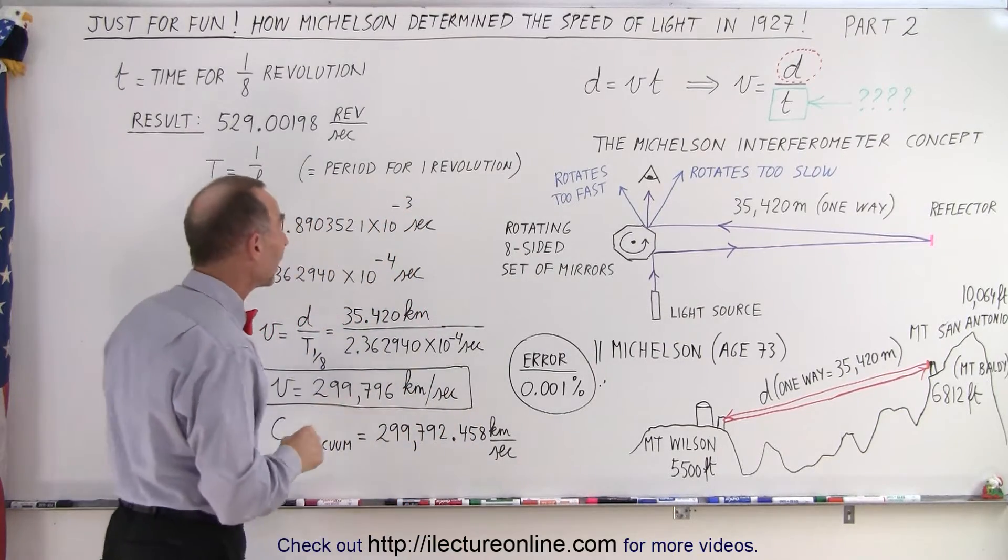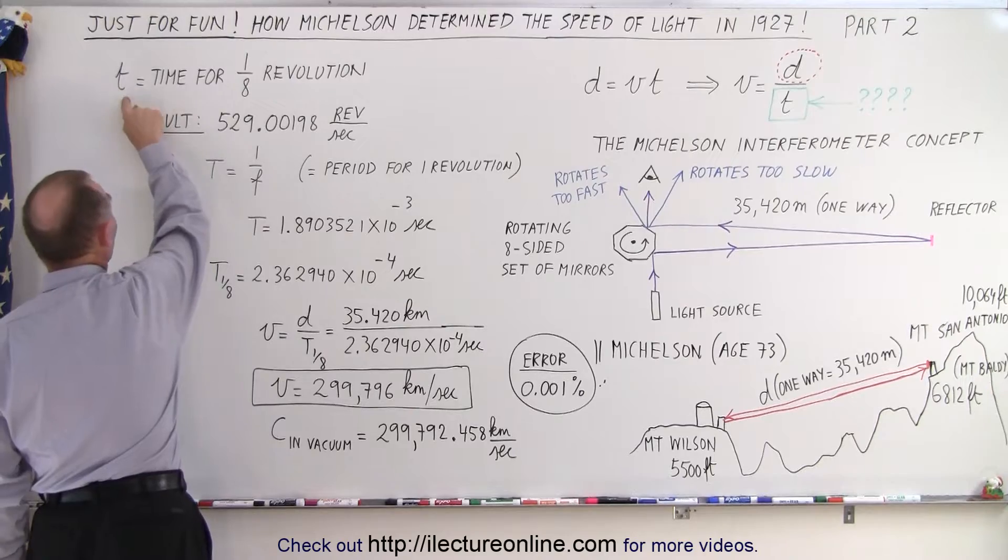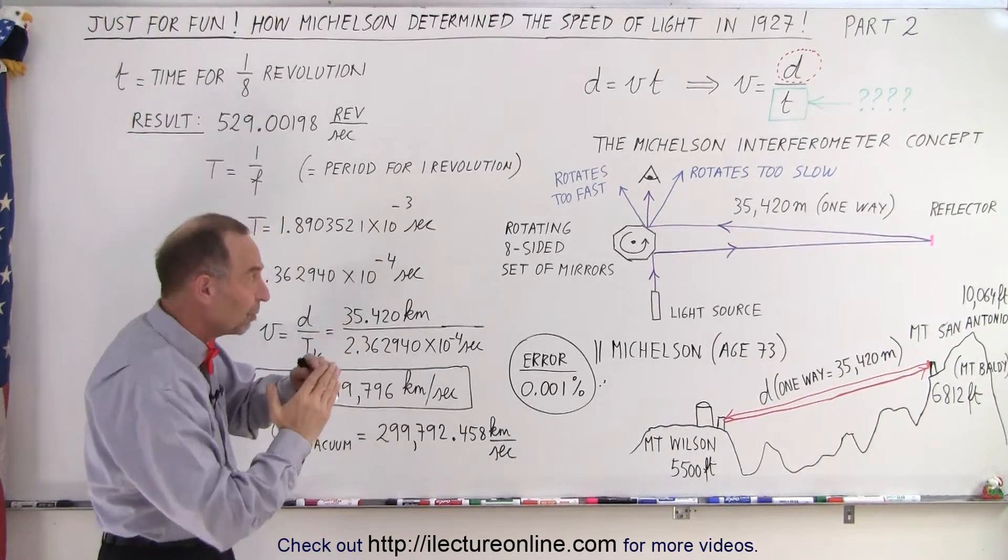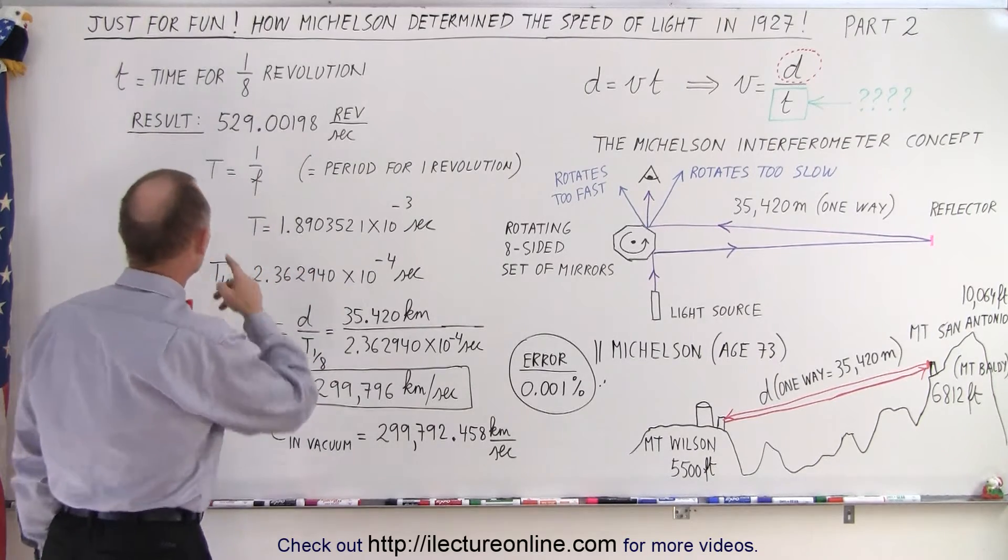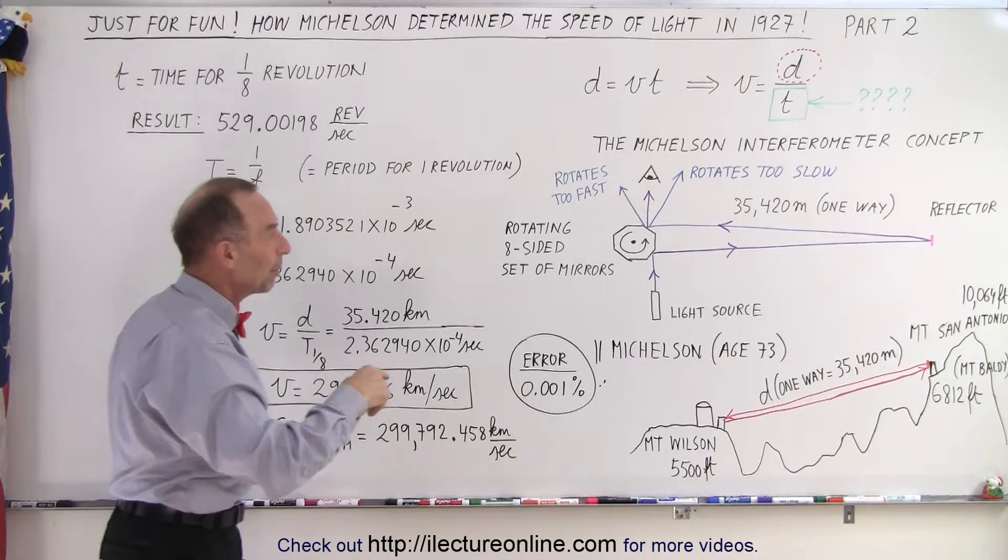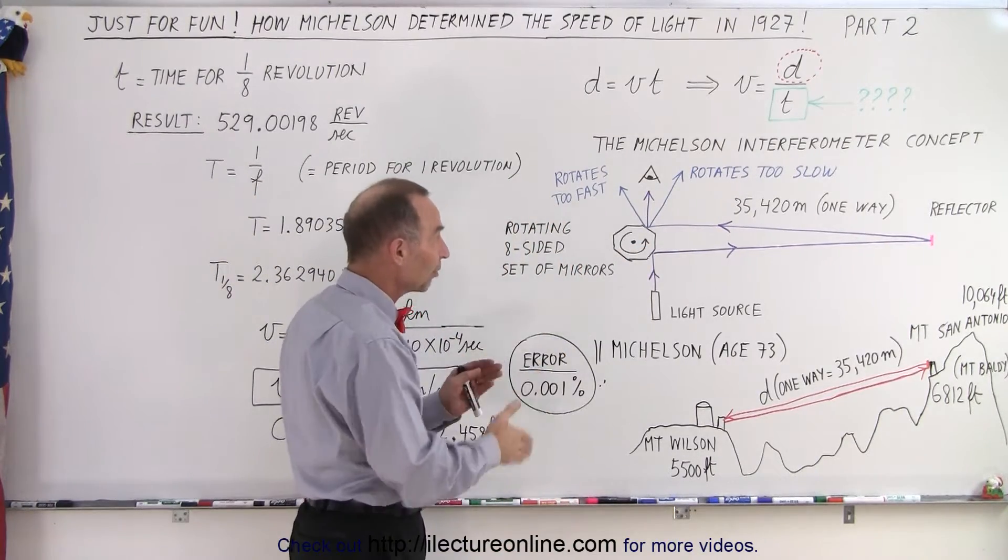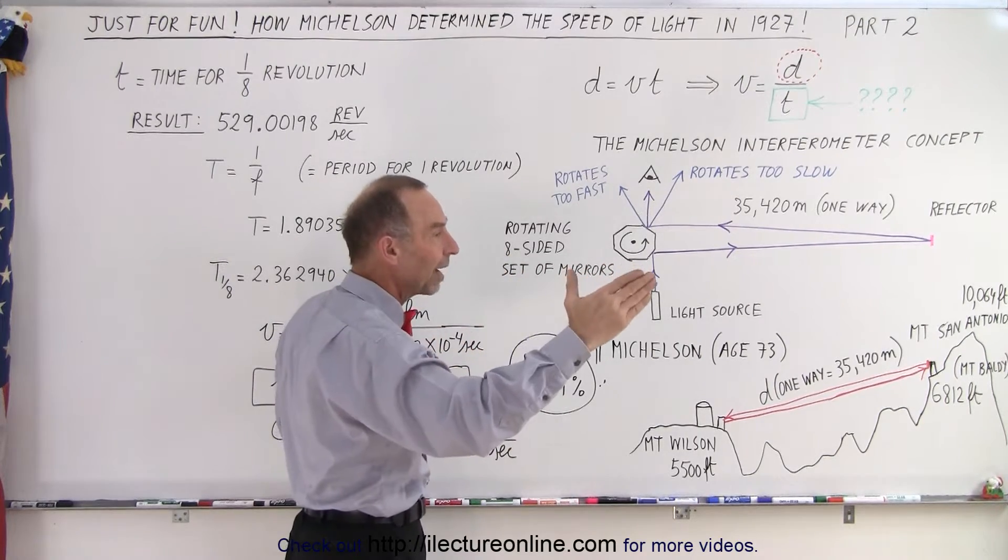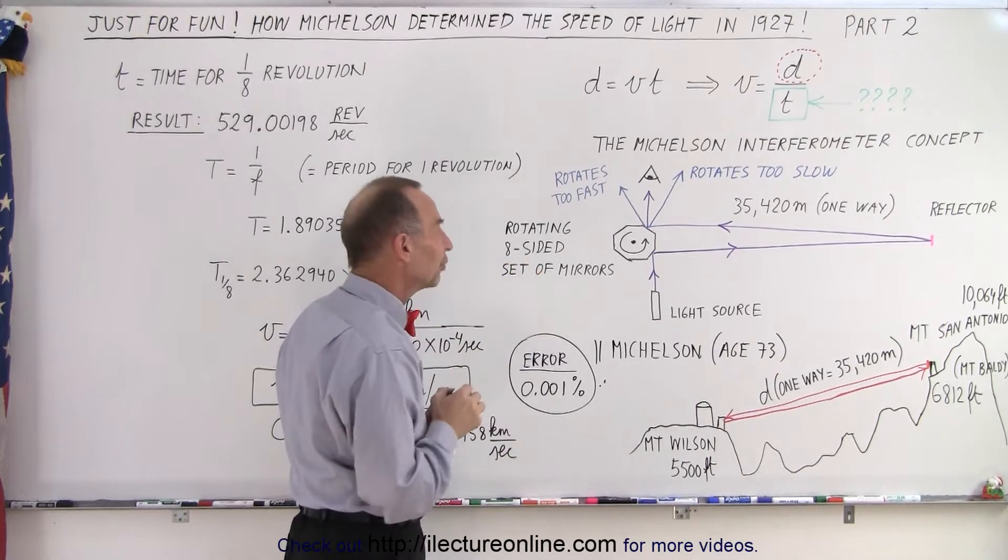Once you have determined that, what you need to do then is you need to figure out how long that took, the time for one eighth of revolution for the next mirror to be just in the right place to see the reflected light. So it turns out when they measured it, they probably had a counter on that wheel and they let it go for a very long time. As long as they kept seeing the light, they would just simply count it and measure over a long period of time to get a very accurate timing for a single one eighth of a turn.